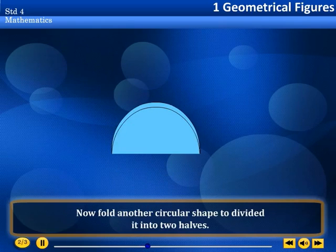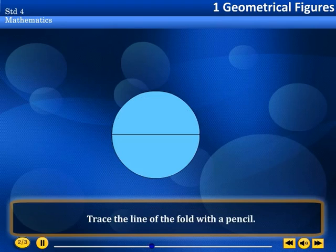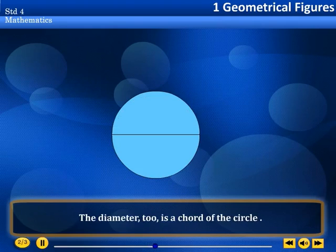Now fold another circular shape to divide it into two halves. Trace the line of the fold with a pencil. This line is called a diameter of the circle. The diameter too is a chord of the circle.